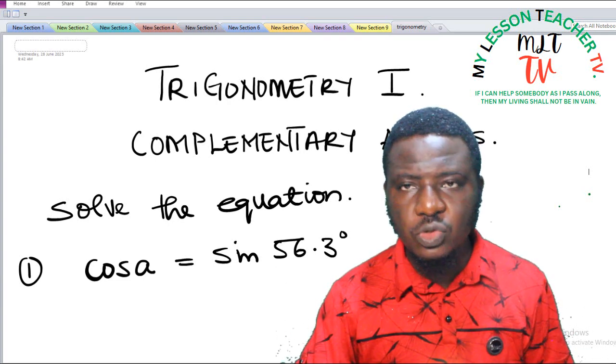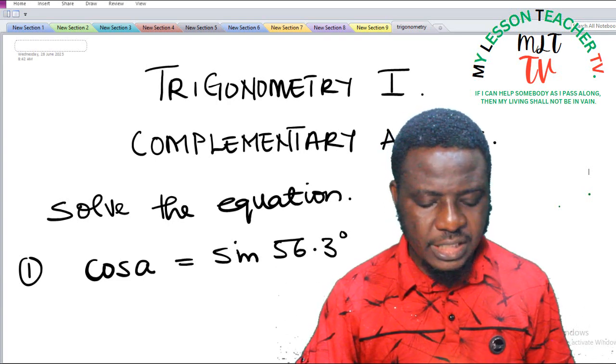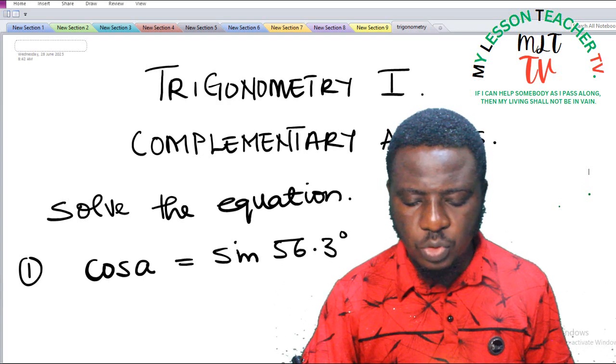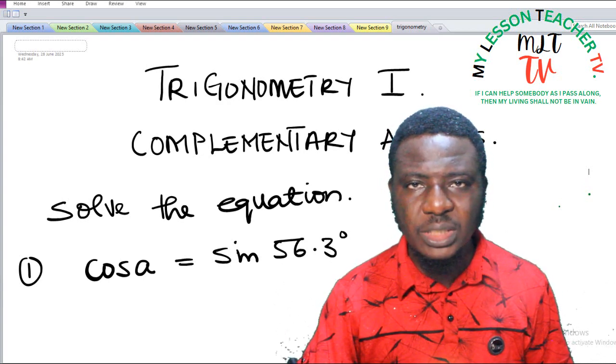In question 1, we are asked to solve the equation: if cos A is equal to sine 56.3 degrees, what is A?